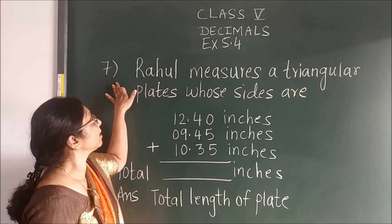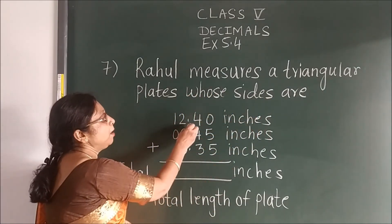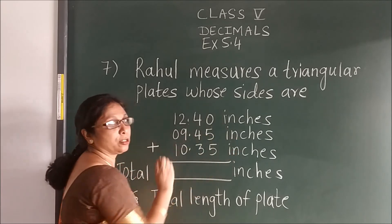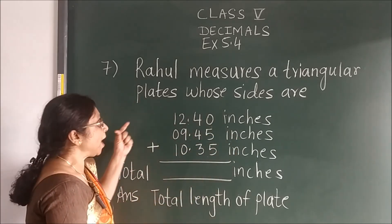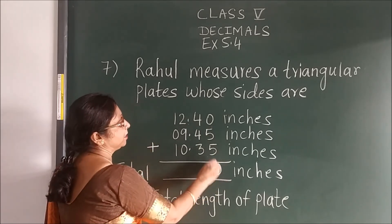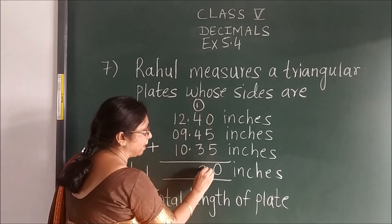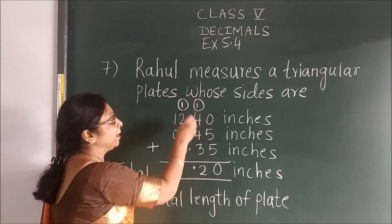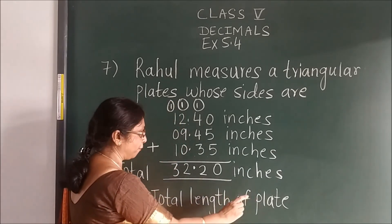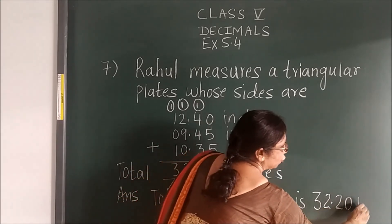Now the 7th sum. Rahul measures a triangular plate whose sides are 12.40 inches, 9.45 inches, 10.35 inches. We have to find the total inches. So for total, we add: 5 plus 5 is 10 — write 0, carry 1. 4 plus 4 is 8, plus 9 is 17 — carry 1. Wait, let's work through: 9 plus 2 is 11, plus 1 carry is 12, carry 1. 1 plus 1 is 2, plus 1 is 3. So the total length of the plate is 32.20 inches.